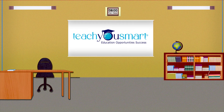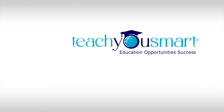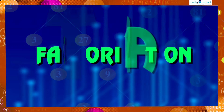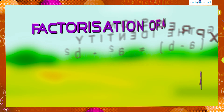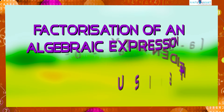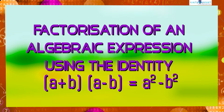Hello students, welcome to Teach You Smart. Let's continue our journey through factorization. Today we are going to discuss the factorization of an algebraic expression using the identity: a plus b multiplied by a minus b equals a square minus b square.